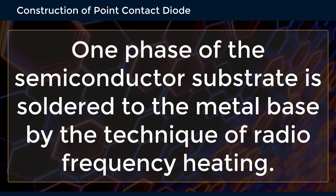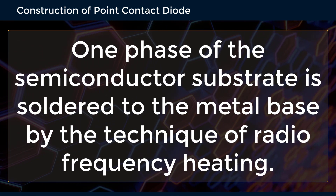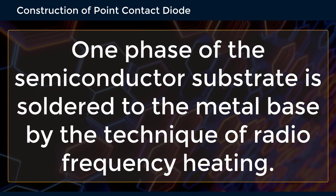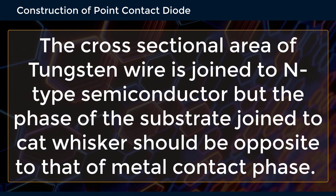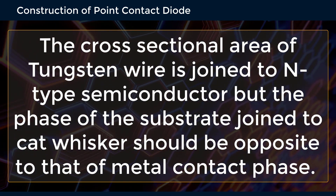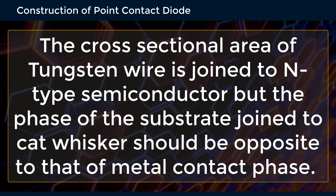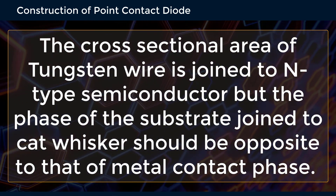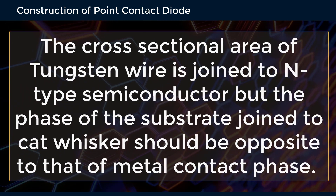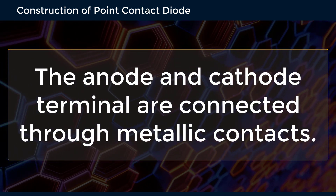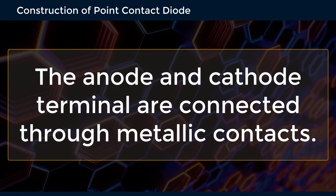The dimension of the semiconductor substrate is about 1.25 mm square and 0.5 mm thick. One face of the semiconductor substrate is soldered to the metal base by radio frequency heating. The cross section of the tungsten wire is joined to the n-type semiconductor, with the face joined to the catwhisker opposite to that of the metal contact face. The anode and cathode terminals are connected through metallic contacts.